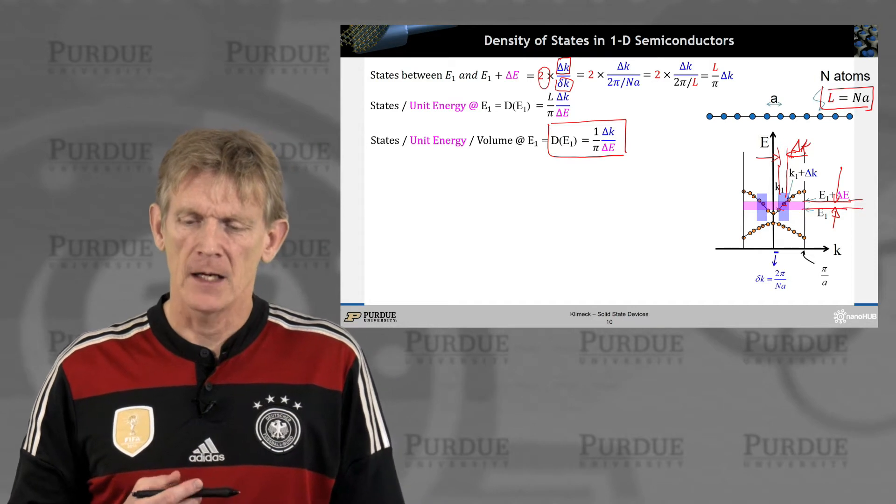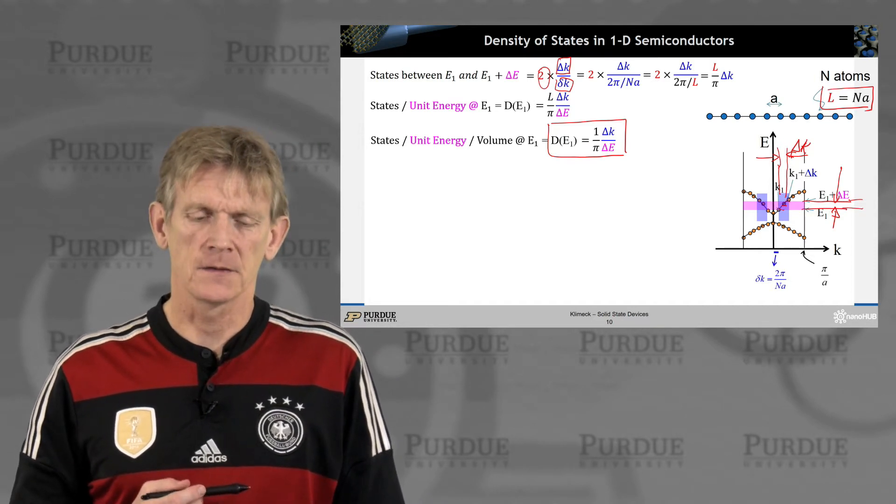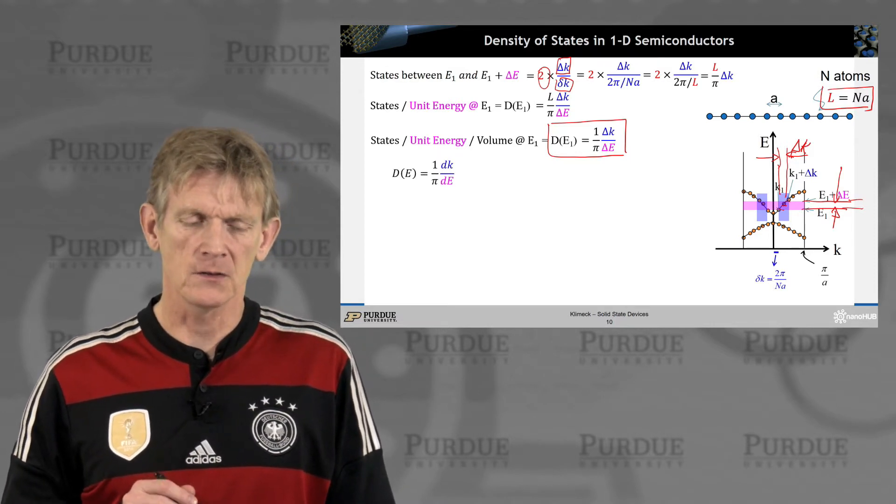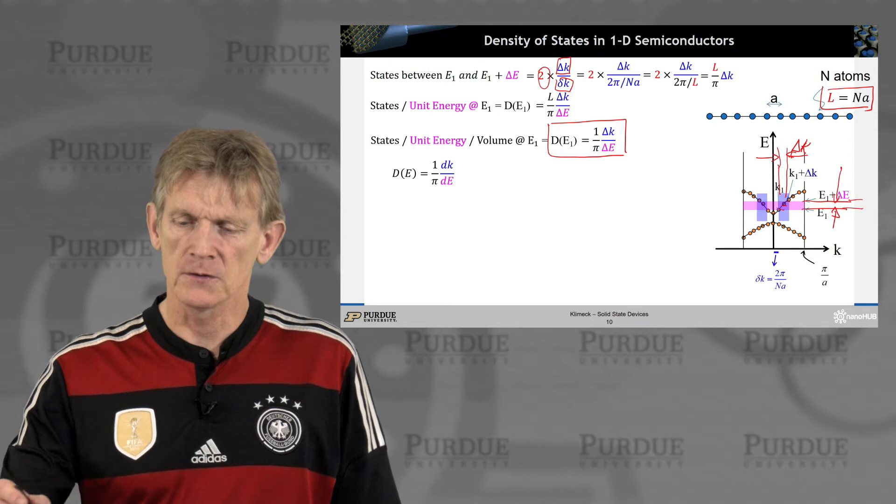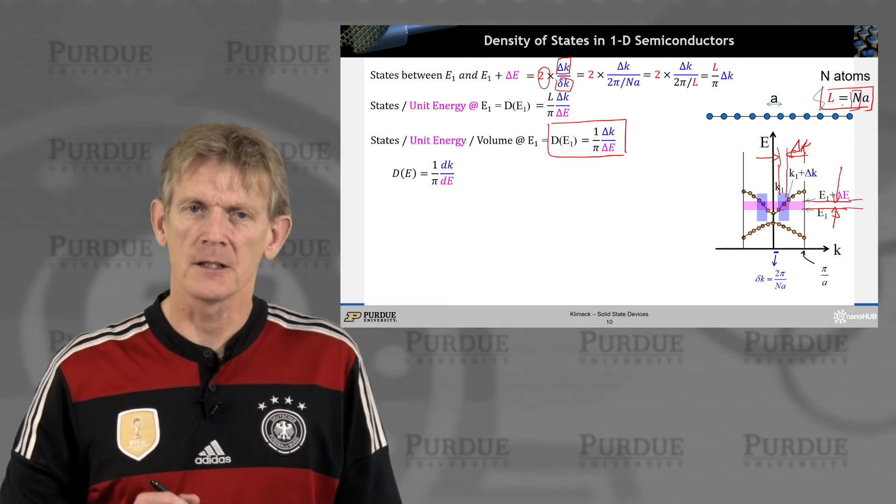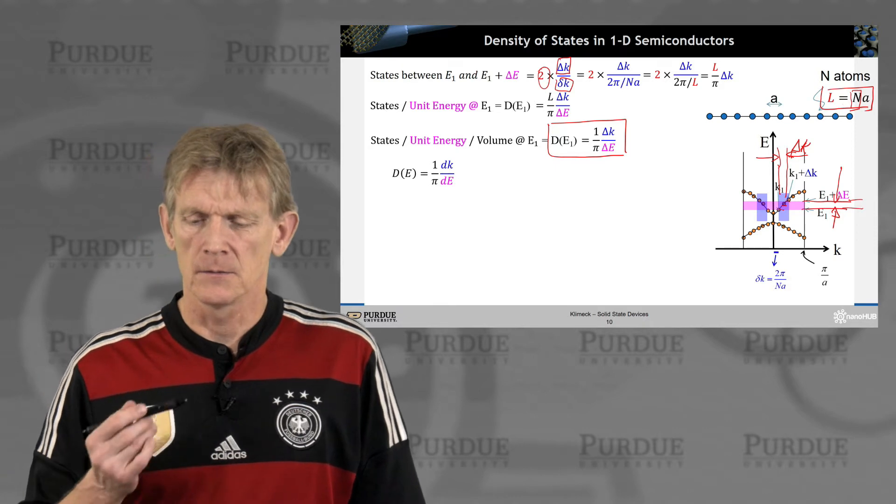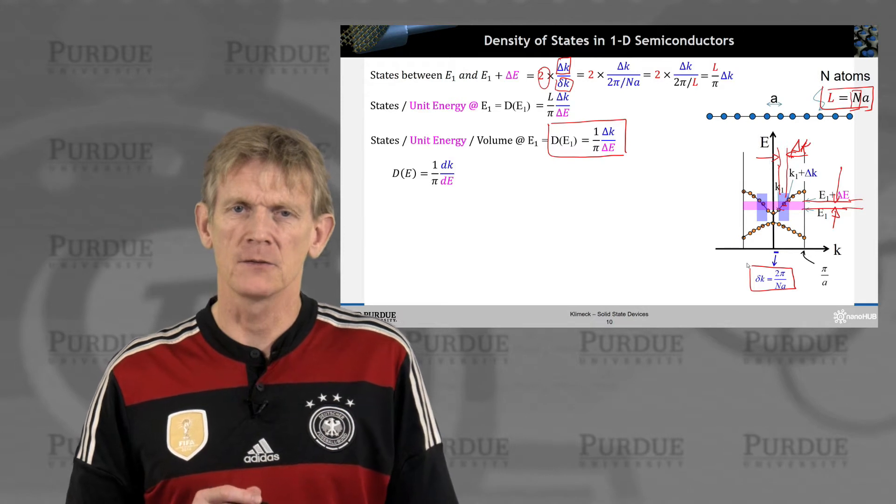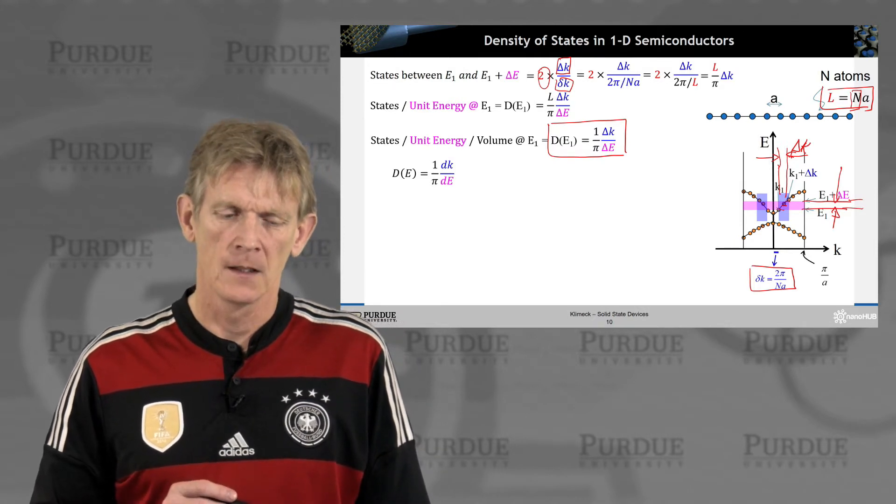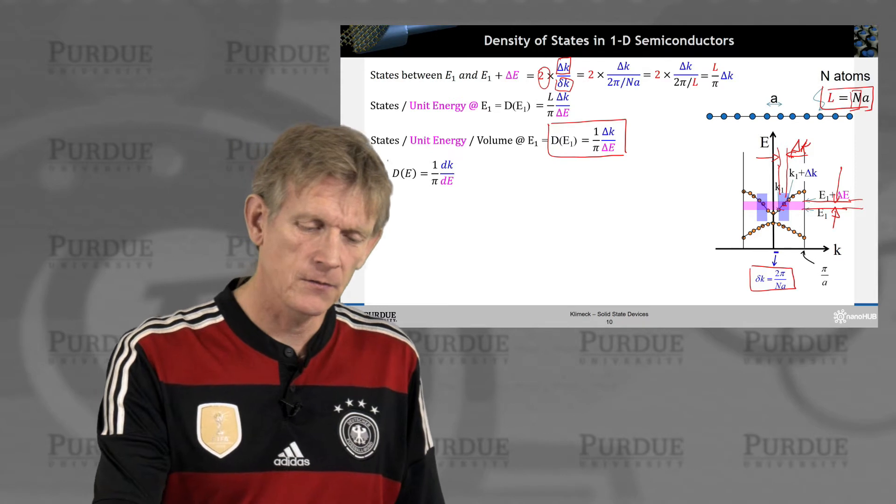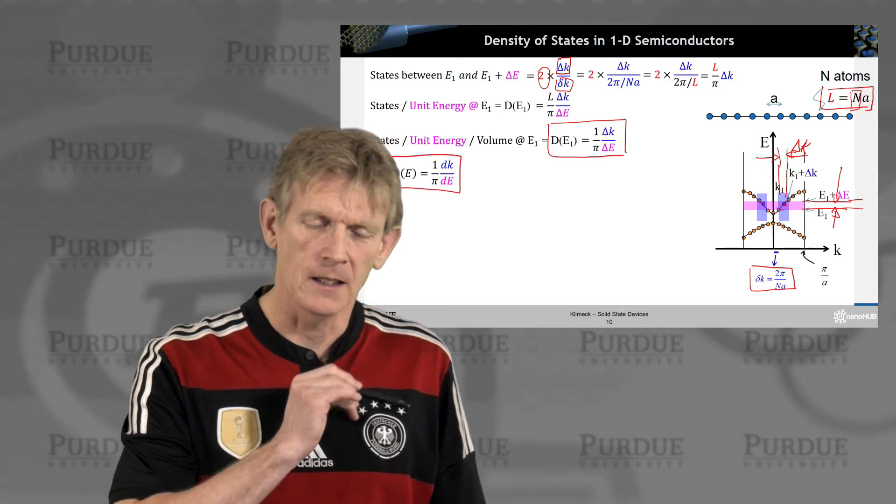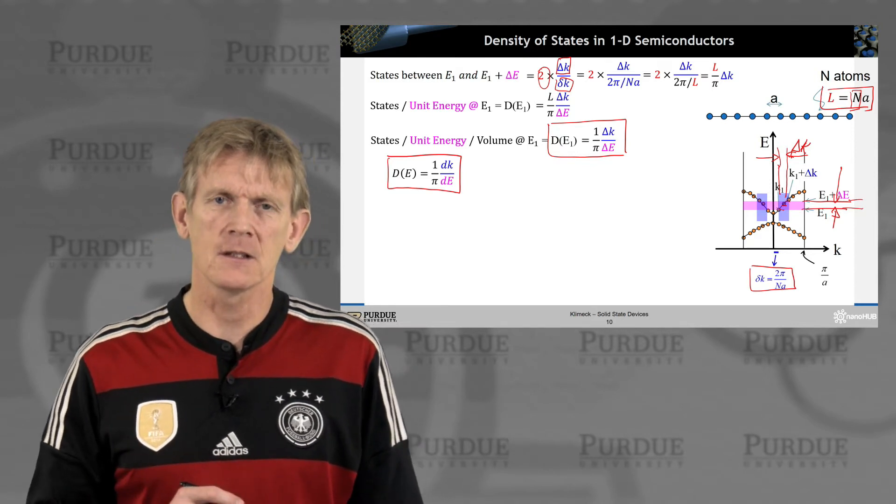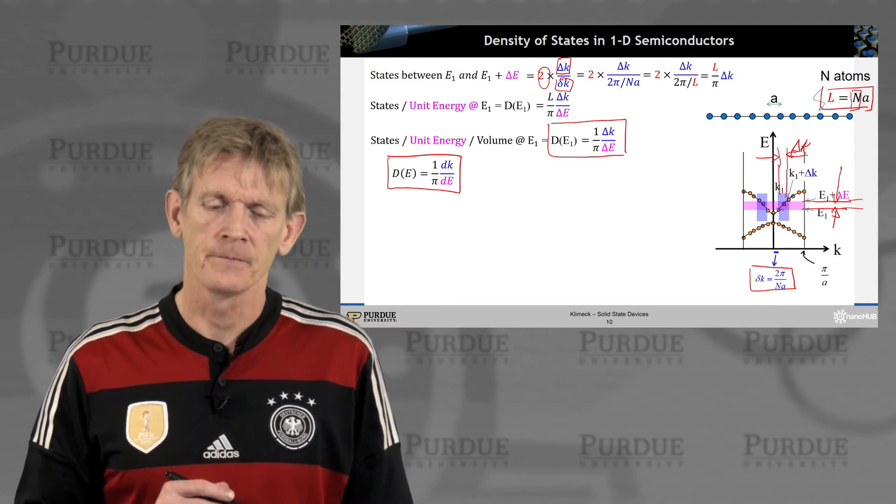And delta k is 2π over nA. What is nA? nA is the length of our system. In this case, it's a one-dimensional system, a 1D chain. It is length capital N times A. So that's the L, the length of the system, the one-dimensional volume of the structure we're considering. So we can put in the volume or the length of the system. That means the number of states that are in this energy range is capital L over π times delta k.